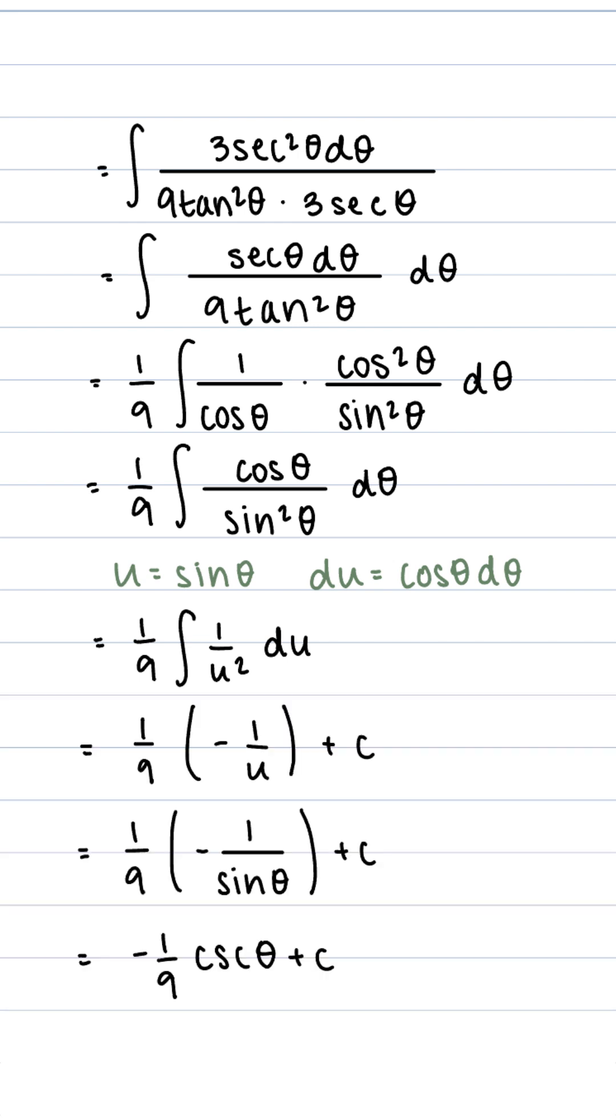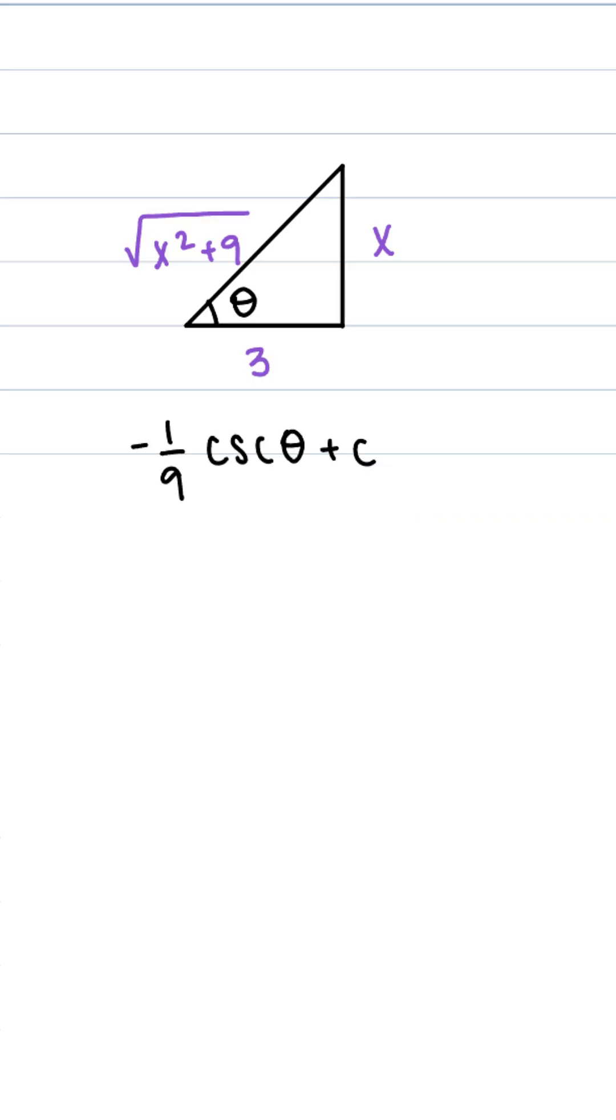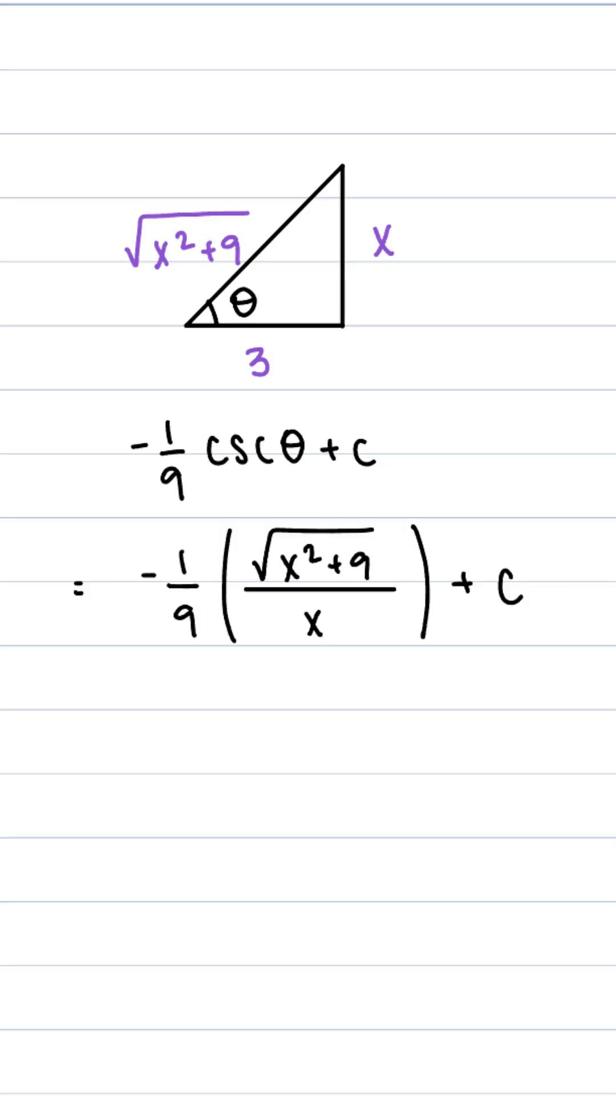I bet you think we're done here, but we're not. What we need to do is end in a function of x. So we're going to use our triangle to replace cosecant of theta. That's going to be hypotenuse over opposite, and here we get our final solution.